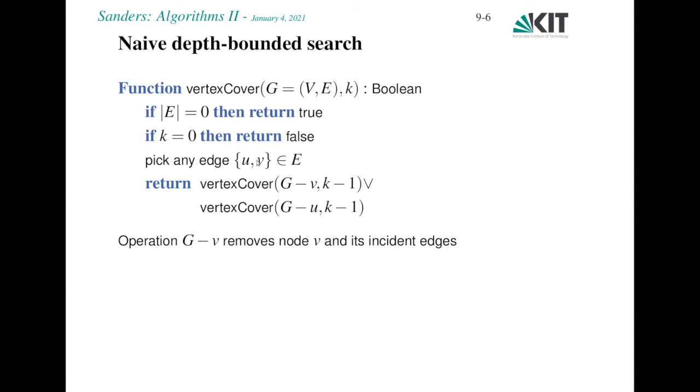Otherwise, we pick any edge u, v, and see that one endpoint of this edge has to be in the vertex cover. So there's a simple two-way case distinction. Either we put u into the vertex cover or we put v into the vertex cover. That naturally defines two recursive subproblems. We remove v from the graph and also its incident edges, and make a recursive call with this reduced graph. We also have to reduce the available number of vertices by one. Similarly, we can do a call on g minus u.